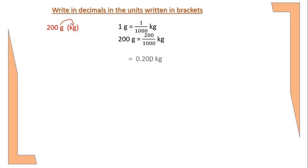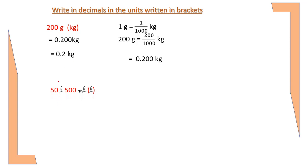After expressing 200/1000 in decimal, it becomes 0.200 kg. So the answer is 0.200 kg. Let's do the last problem: 50 liter 500 milliliter expressed in liters. There are two units — the higher unit is liter and the lower unit is milliliter.